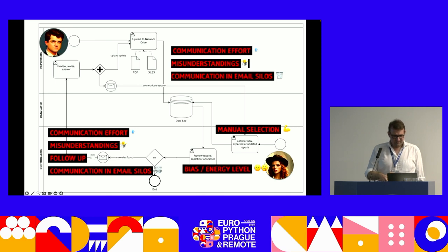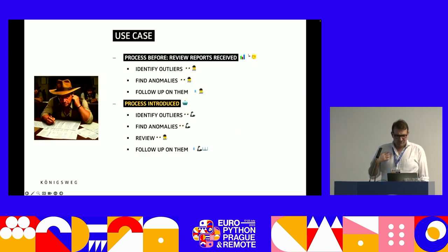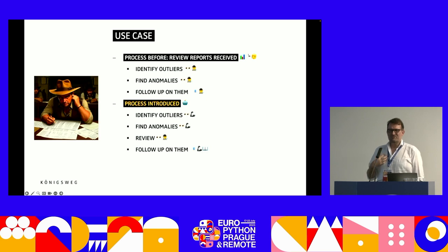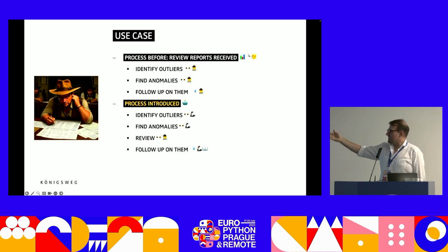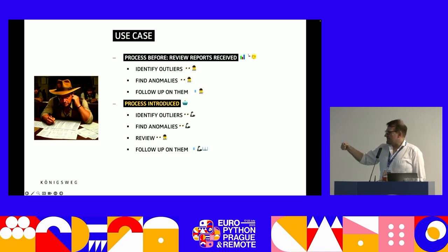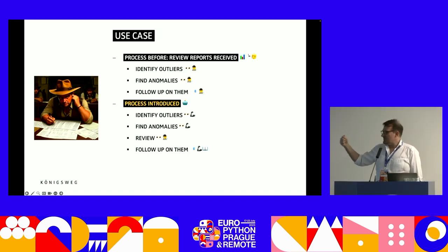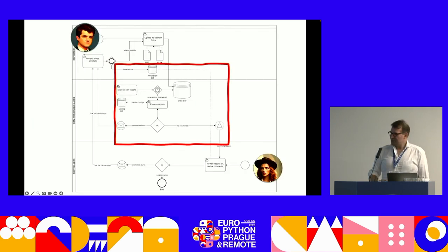There's a cycle that can never end until things are cleared up. Our use case was: we know this isn't the optimal setup, but we have to work with these reports until the company establishes a modern structure. So we automated the identification of outliers and anomalies. AI acts as an assistant here — handling the boring stuff and heavy lifting — while humans still review, and follow-up is also automated.